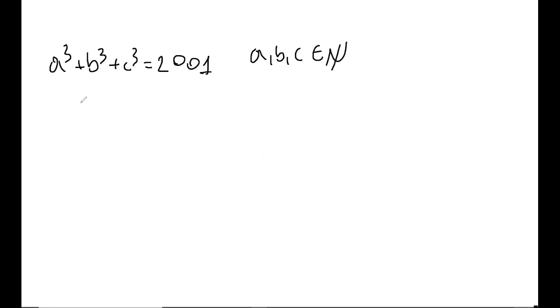So here what we have is that a, b, and c are natural numbers such that a³ + b³ + c³ = 2001. We must find all triplets a, b, and c such that this will be true.